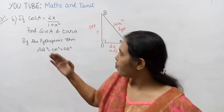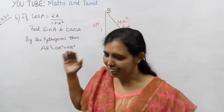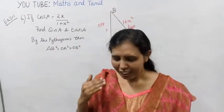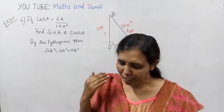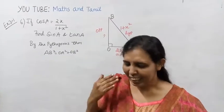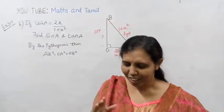In trigonometry, if cos A is equal to 2x divided by (1 plus x squared), we need to find sin A and tan A. Trigonometry involves sides and ratios.